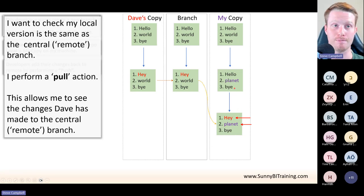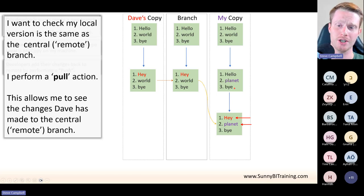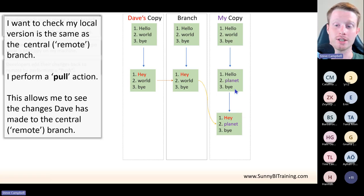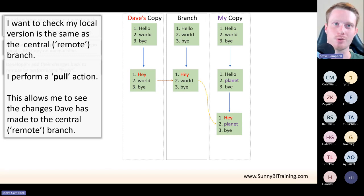Obviously if we had both worked on line one it would be what's called a conflict — we'd both tried to change the same thing. That's why communication is really important, and a lot of the tools that manage Git help manage this. The technology itself can say hey, you haven't got any conflicts — Dave changed line one, you've changed line two, so we merge the changes. And this is what it means to merge — merge them together.